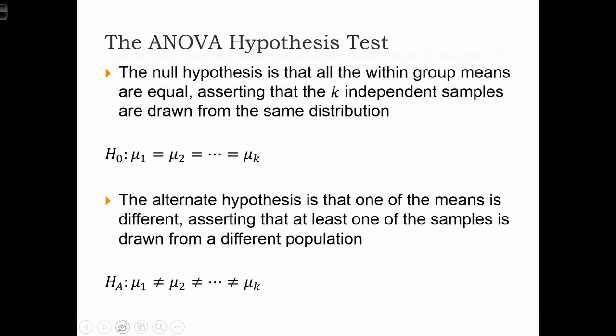In ANOVA hypothesis tests, the null hypothesis is that the within-group means are equal to each other. So in this case, the null hypothesis is that the mean of group 1 equals the mean of group 2 equals dot dot dot, all the way up to the mean of group k.